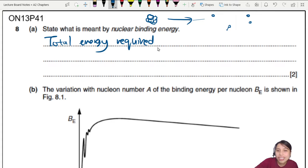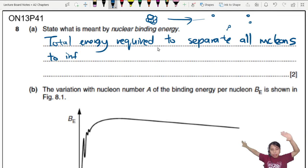...to separate all nucleons - nucleons includes protons and neutrons - so all nucleons in a nucleus to infinity. Separate to infinity means completely take them apart and put all the nucleons separately very far away. This is a two mark question: one mark for the definition and the other for discussing separation to infinity.